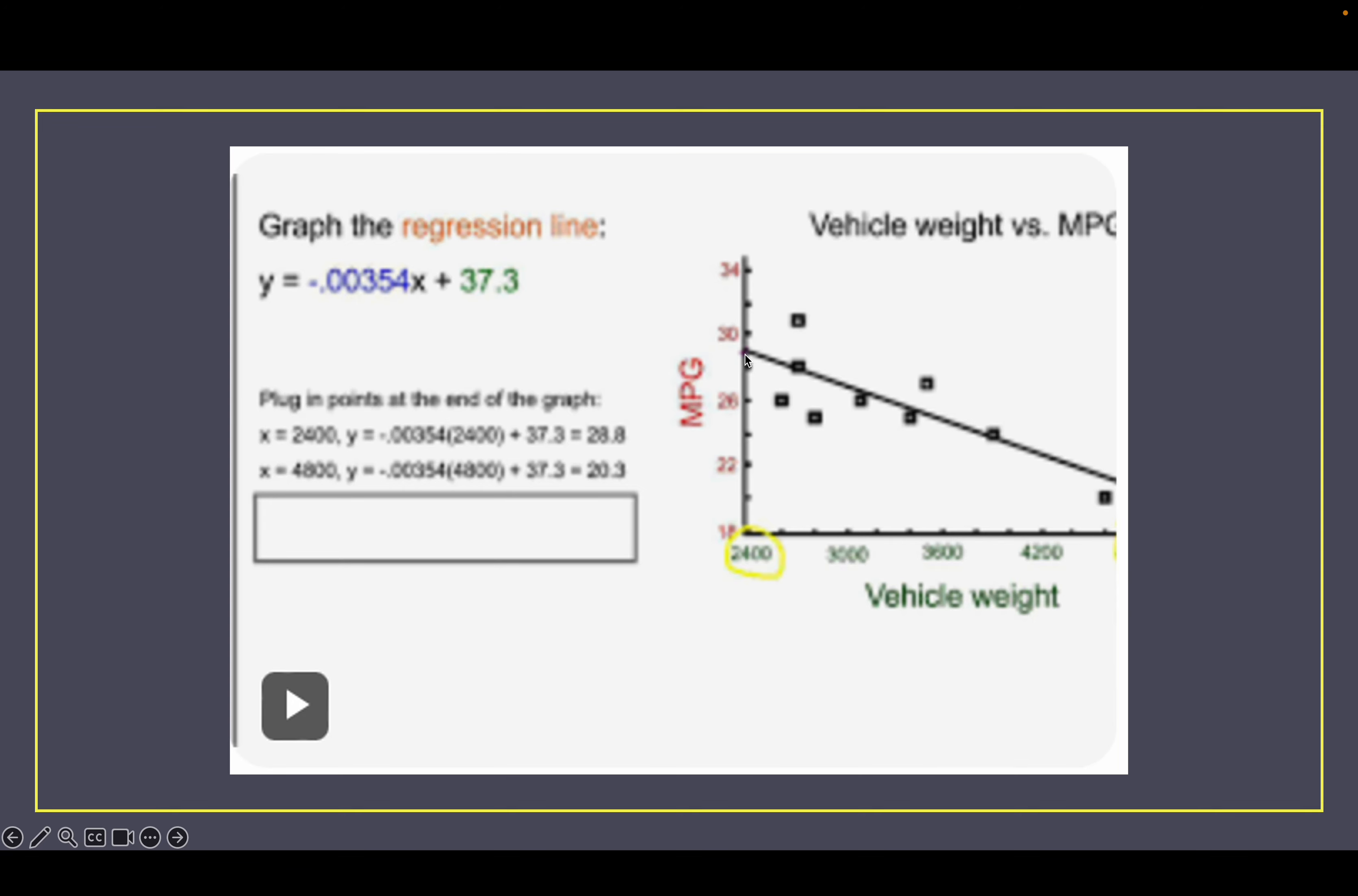Here is the equation for the regression line. You want to find the value of 2400, plug in 2400 for x. It says 28.8, so here is 2400 and that sure looks like it's right about 28.8 right there. The next one is what about at 4800, which is the other end of the graph, and it comes out with 20.3.